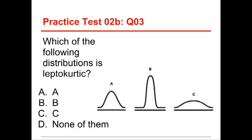Number three, which of the following distributions is leptokurtic? That's our little vocabulary word. And you get the choices between A, B, and C, or none of them. Well, the answer in this case is B. The middle distribution, which is tall and pointy, is the right one.